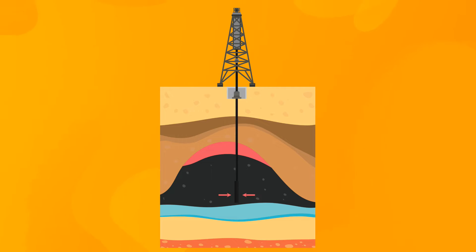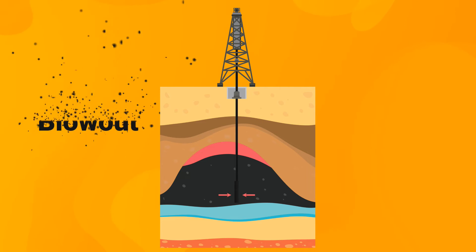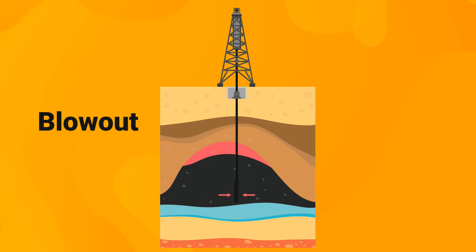On the other hand, if this kick is ignored, it will keep flowing upward and expanding until it reaches the surface. Now the kick is no longer controlled. This is called a blowout. But the question is, how can a blowout lead to an uncontrolled fire?